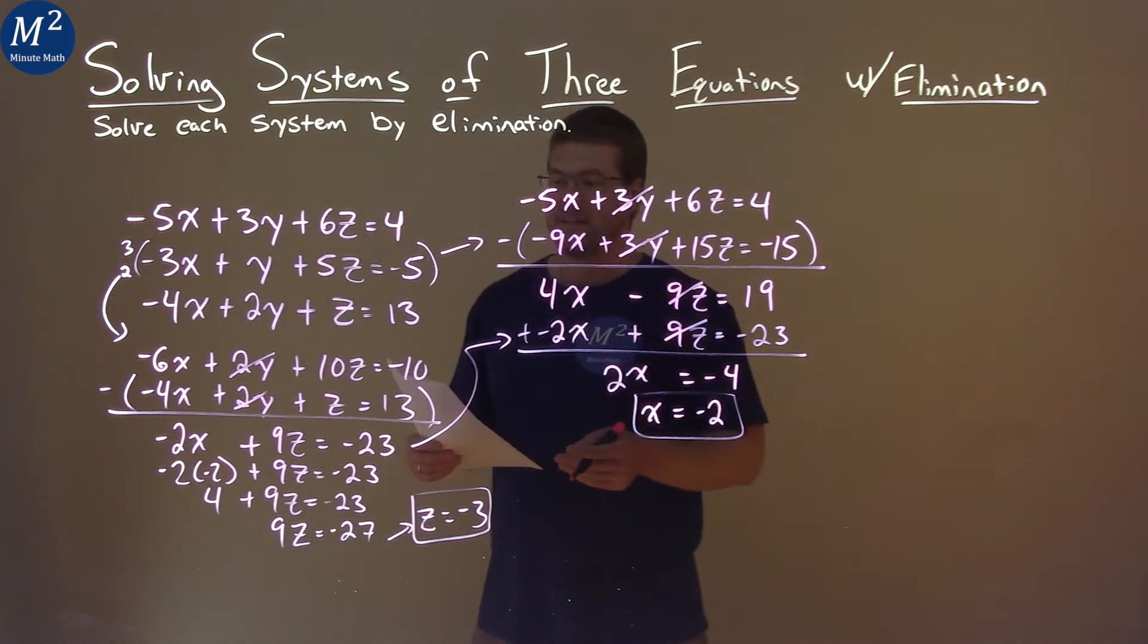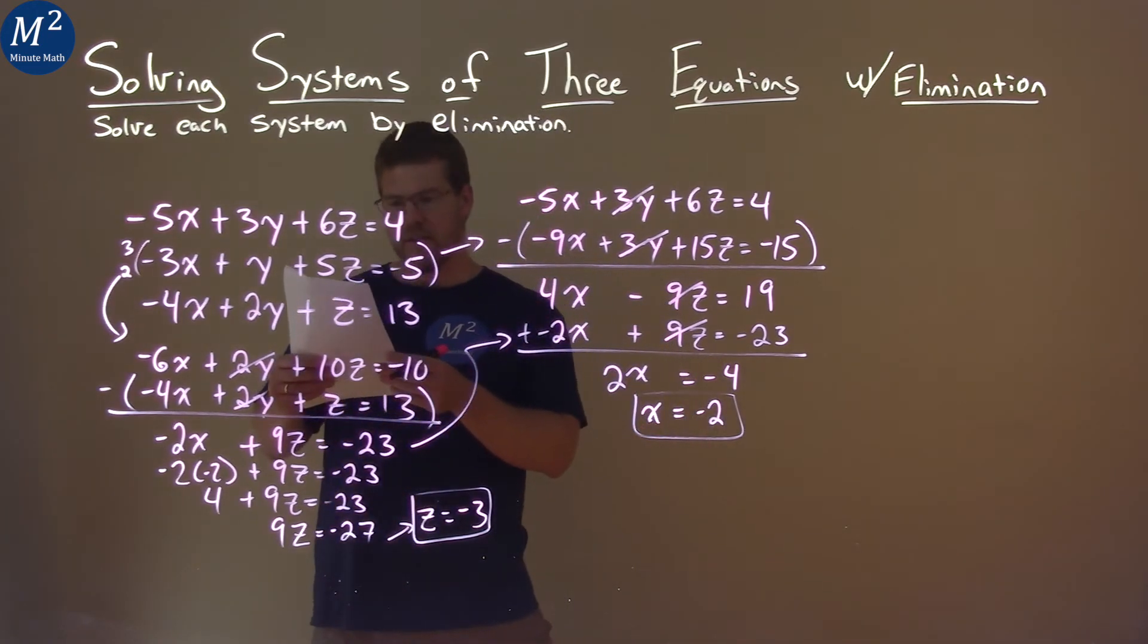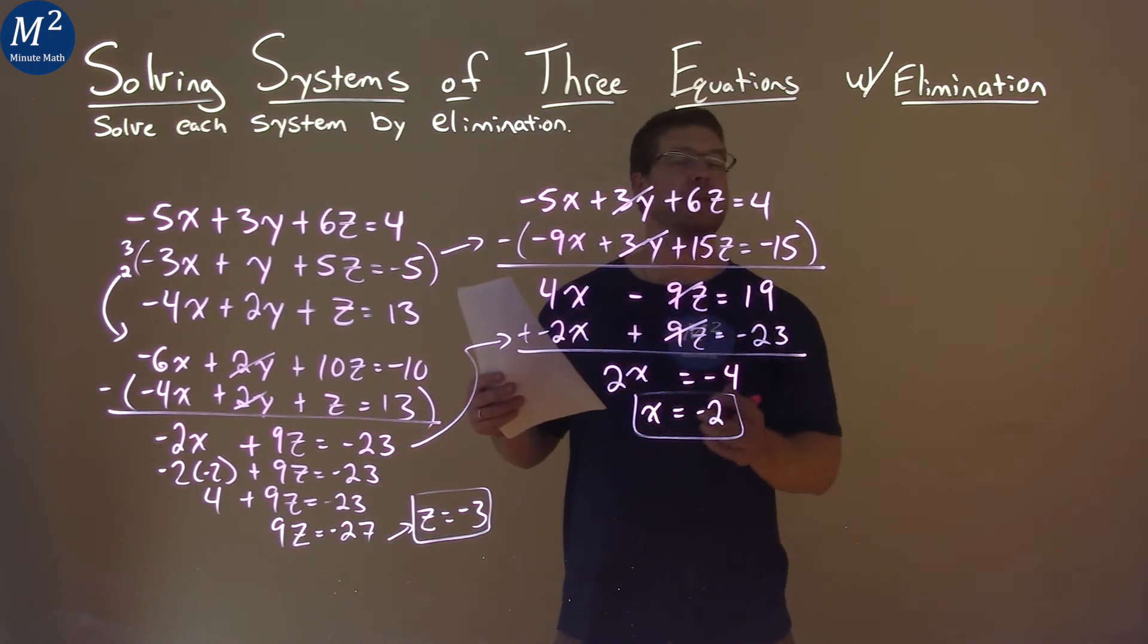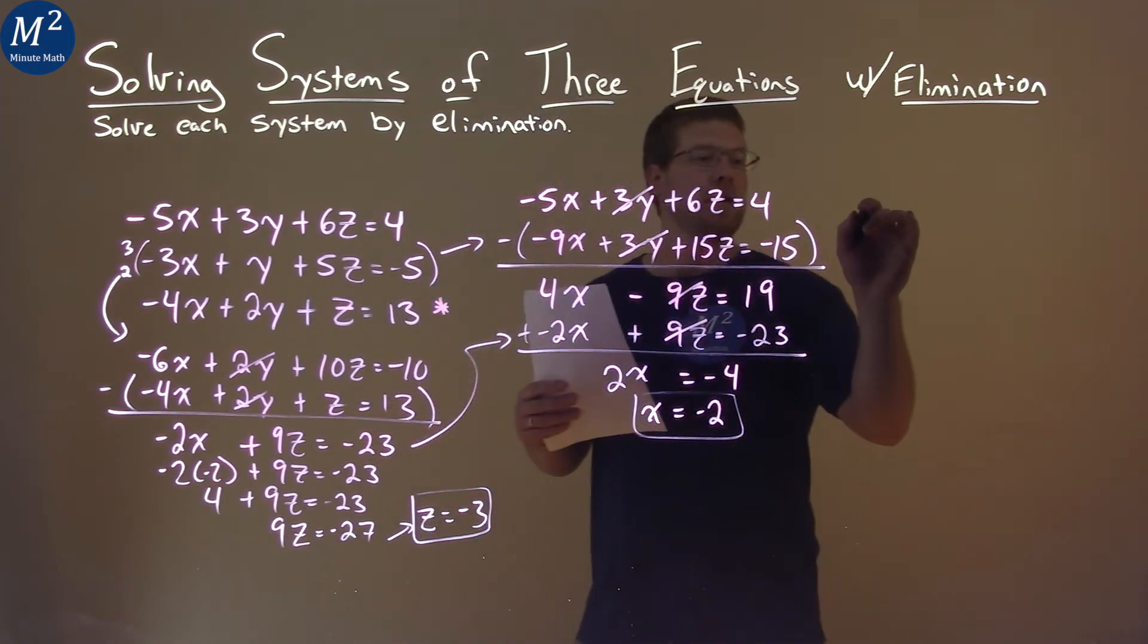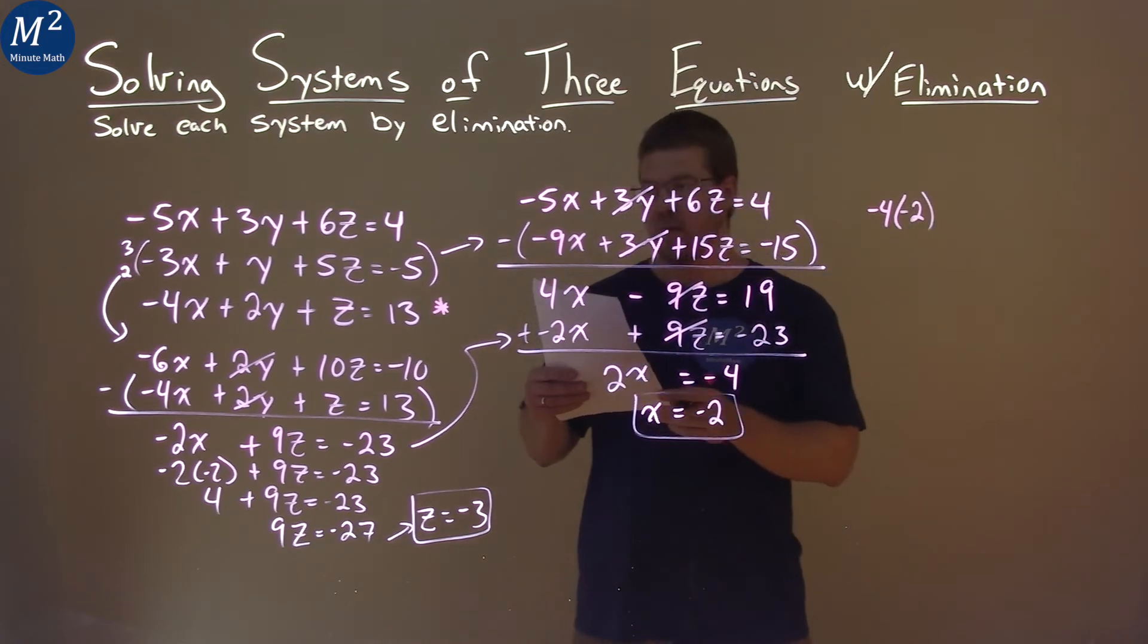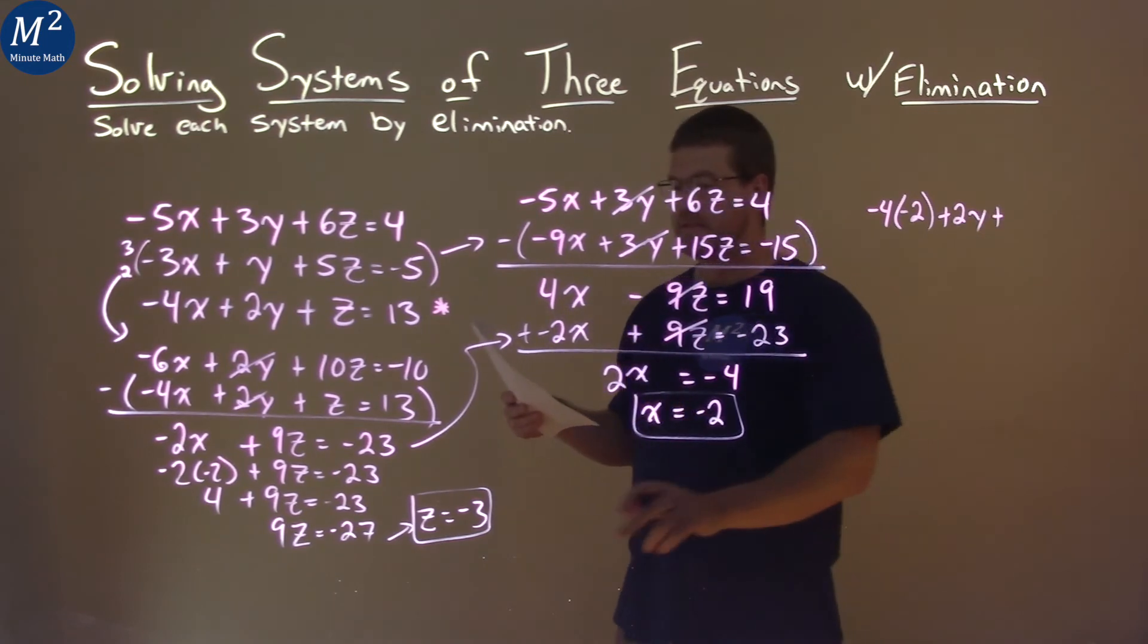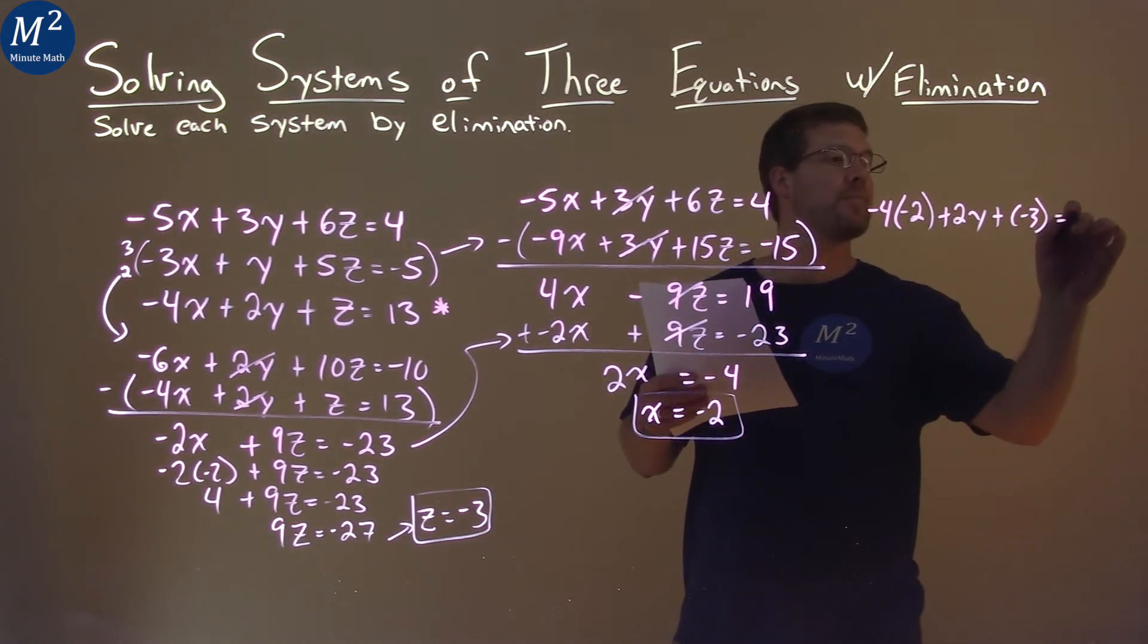So we have x equals negative 2, z equals negative 3. And what we have to do now is pick one of our equations and plug these values in for their variables. Okay, so the equation I picked here was the last equation, and it really doesn't matter. It can be any of them. I'm just going to pick the last one here. So I'm going to rewrite the last equation. Negative 4, but instead of x, I put negative 2. Then we have plus 2y, plus z, we're going to put negative 3 in, and that's equal to 13.